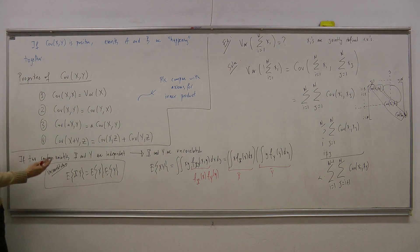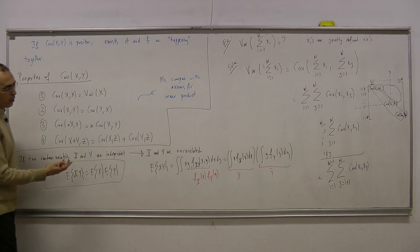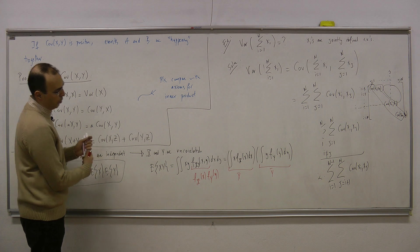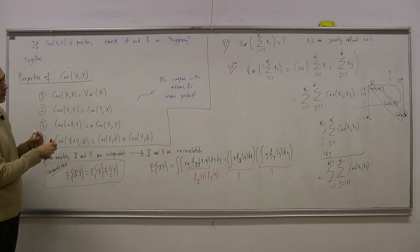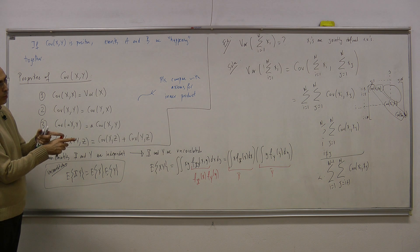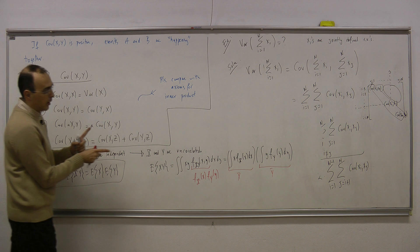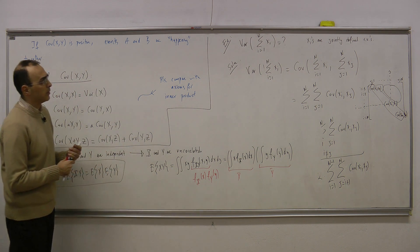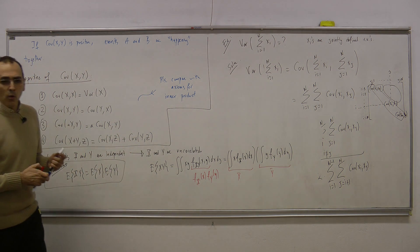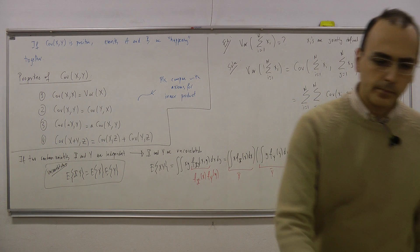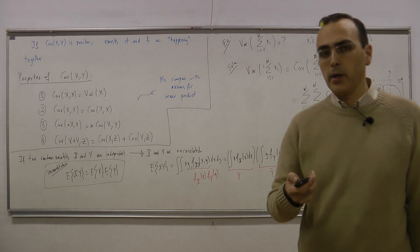Uncorrelatedness is not equivalent to independence, but we interpret it as some lack of similarity or dependency between two random variables. As we discussed, there is a geometric interpretation: if x and y vectors are orthogonal, we interpret them as uncorrelated random variables. Thank you very much, that's all for today.